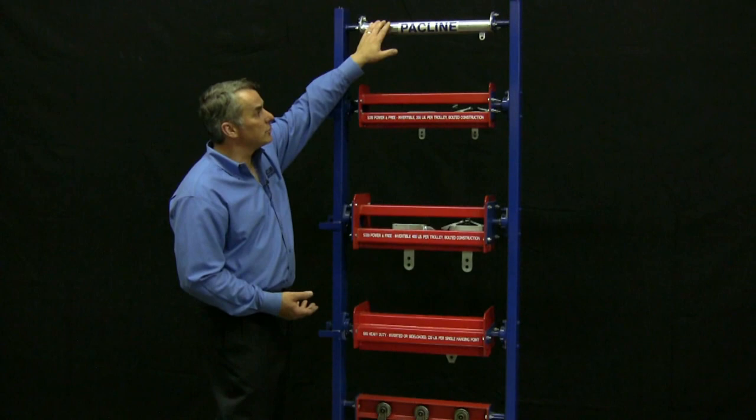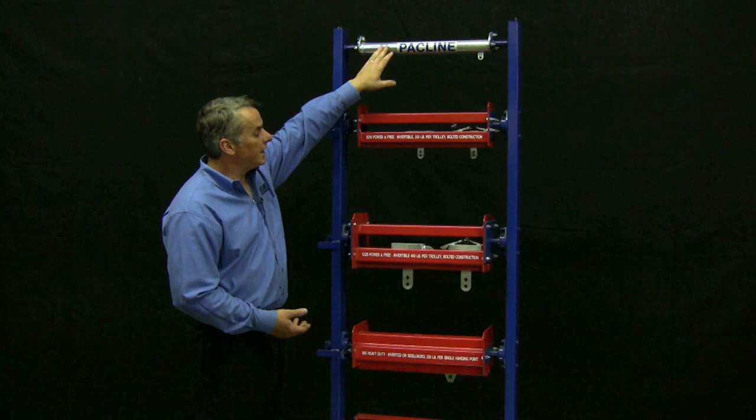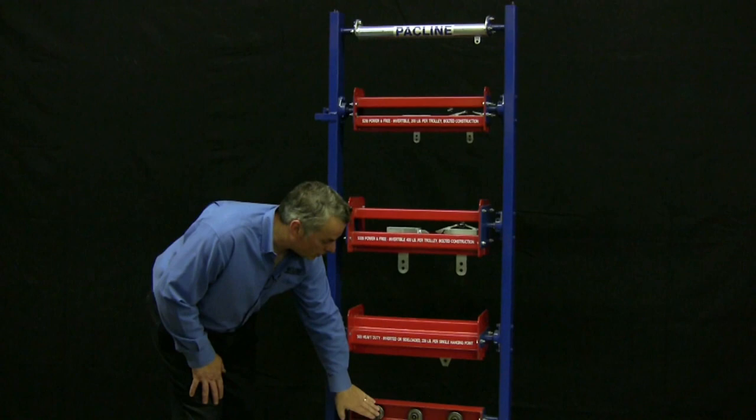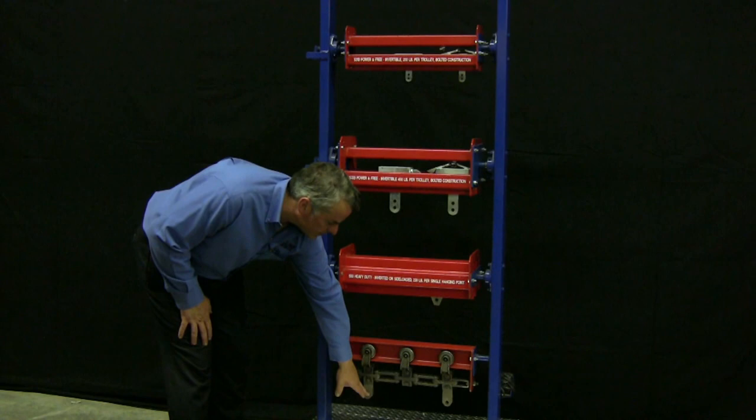It's very simple. On an enclosed track overhead conveyor like this, we have a chain running inside this tube. On an open track conveyor, you have a number of trolleys that are pulled by a chain and the load will be attached below.